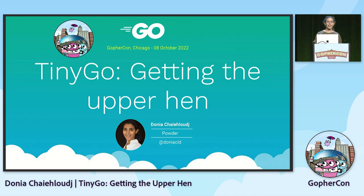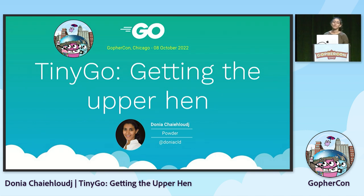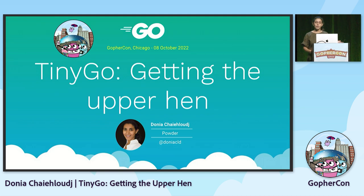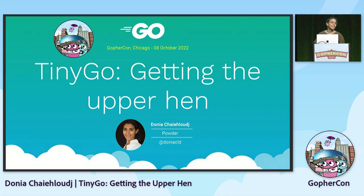My name is Donia Chayel-Rouge, and I'm a Go backend developer. I'm working at Powder. We are building PC and mobile apps for gamers to create content. And you can find me on social media as Donia CLD - it's easier to compress my last name.